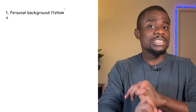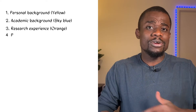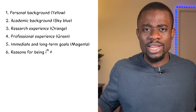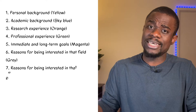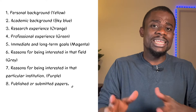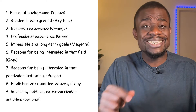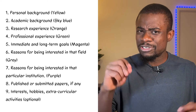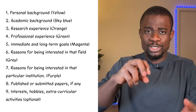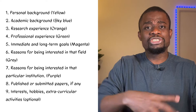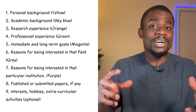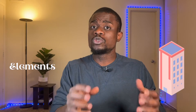The elements are: your personal background, your academic background, your research experience, your professional experience — that's talking about your full-time, part-time, or volunteer roles — immediate and long-term goals, reason for being interested in that field, reason for being interested in that particular institution, published or submitted papers if any, and interests, hobbies and extracurricular activities, which is actually optional. My personal statement is made up of seven paragraphs, which we'll go through in a minute. After reading each paragraph, I'll show you the elements I crafted into that paragraph so you can know how to build yours.